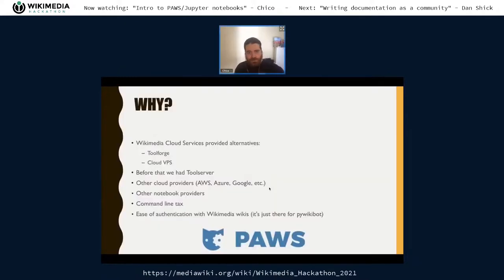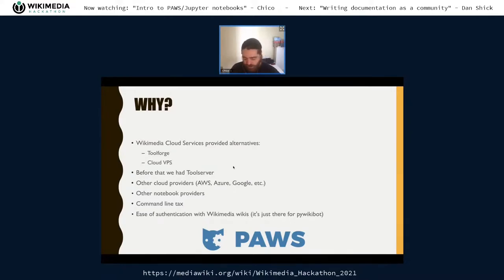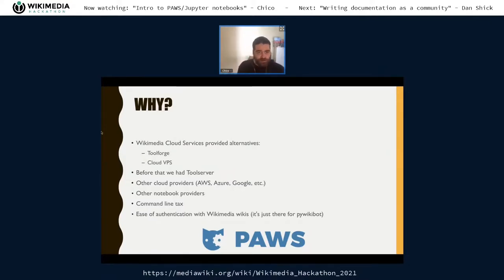So, getting into PAWS — why was it created? UV was one of the main drivers for this. PAWS is very oriented toward easing the way that Wikipedians and Wikimedians can use more advanced tools, can use bots and scripts to do their edits and get things to work.